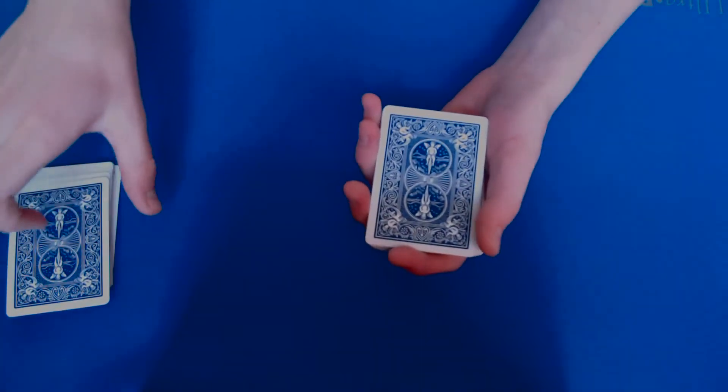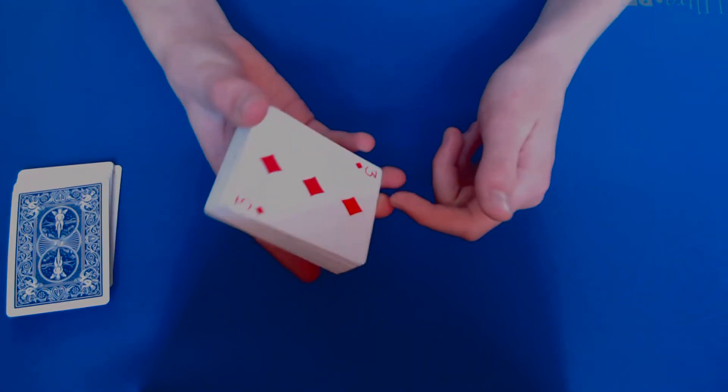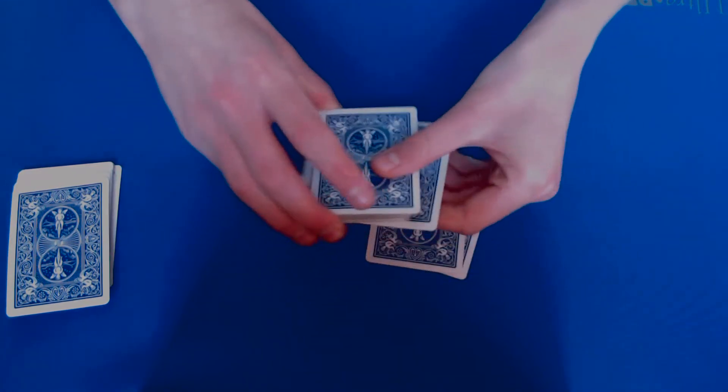I'll go ahead and take this, right like that, and I'm going to do a shuffle called the Klondike shuffle. Now, this is where I take a card from the top and the bottom and deal it down just like so.